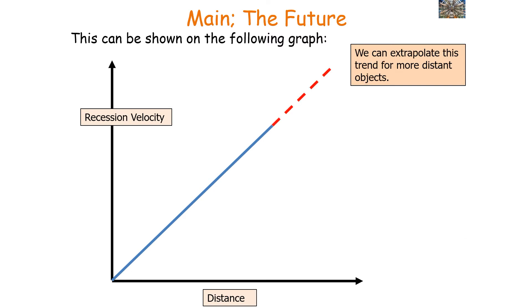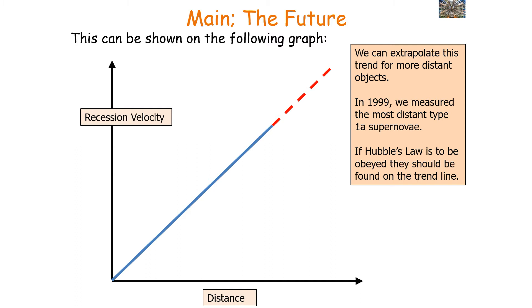So we can extrapolate this trend for more distant objects. So in 1999 we measured the most distant Type 1a supernovae. So if Hubble's law is to be obeyed, then they should be found on the trend line. So here's our expected result for the Type 1a supernovae.